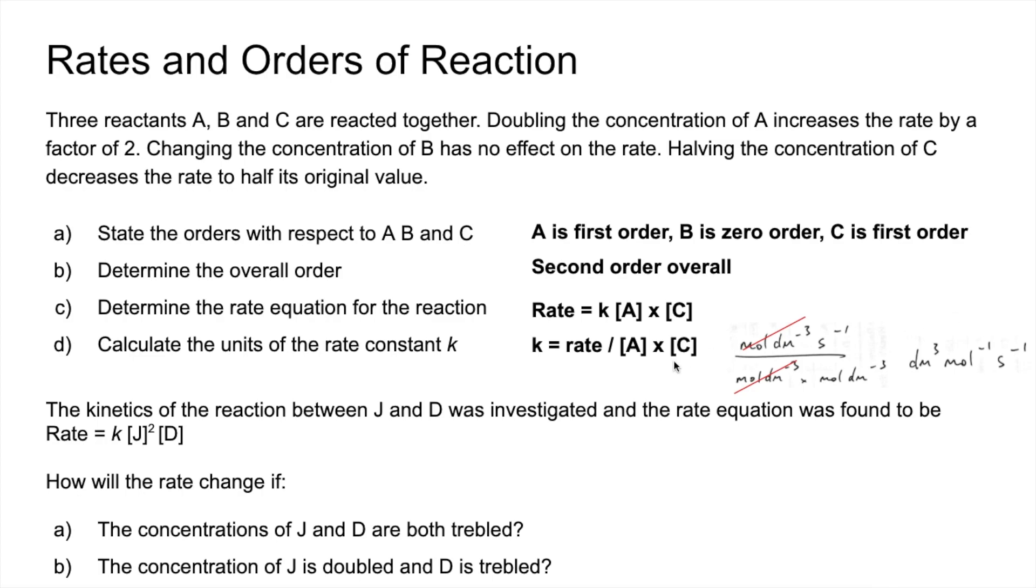Second question about J and D. So the concentrations of J and D are both trebled. What's going to happen to the rate? So it would be 3 squared multiplied by 3 for that one, so that's a 27-fold increase.